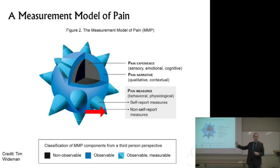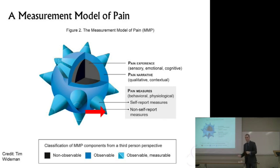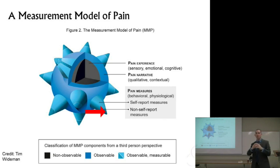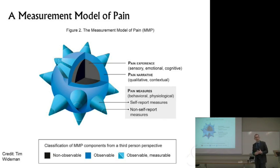We can sometimes use these and start to triangulate if we use different measures to try and pinpoint where that experience is. And then finally, right on the very tips of those little spiky balls are the non-self-report measures, the physiological measures — this might be where functional MRI exists, or some of the diagnostic imaging. It's giving us perhaps a clue as to what might be happening. But every subsequent step is further and further from the true experience. The pain narrative is as close to gold standard as we're going to get.